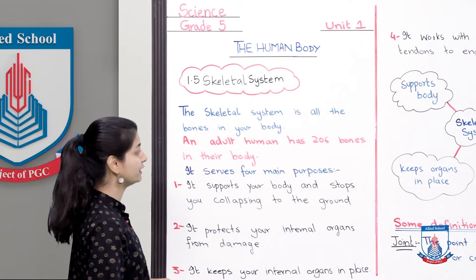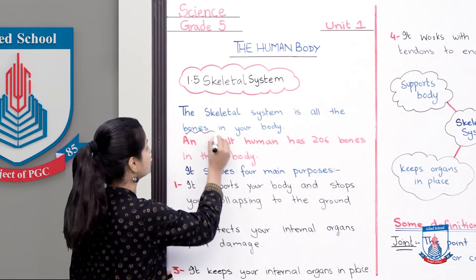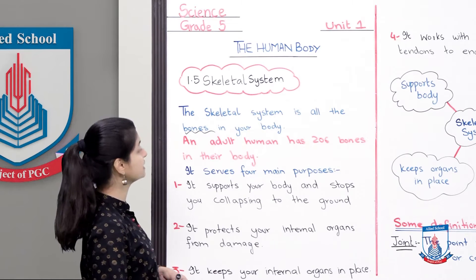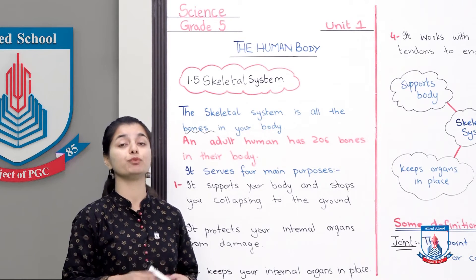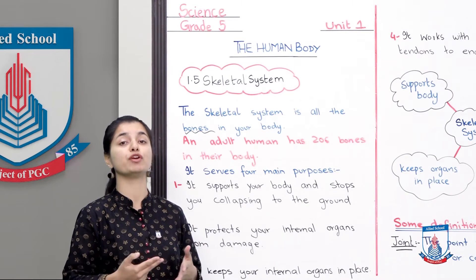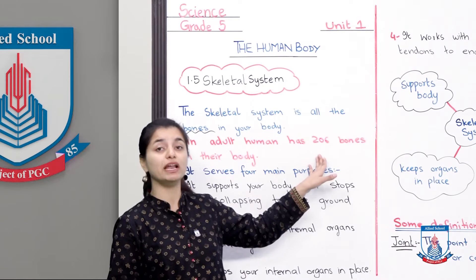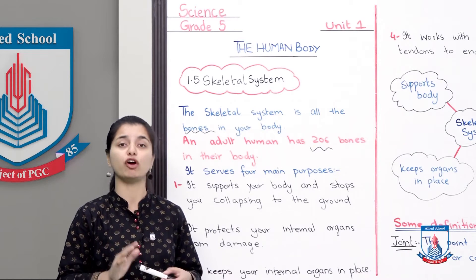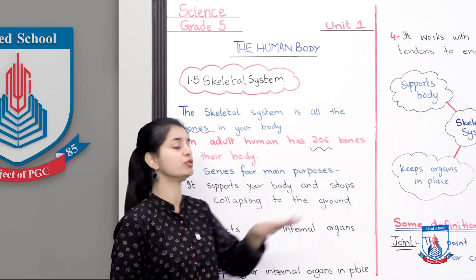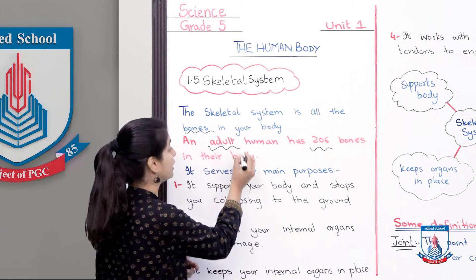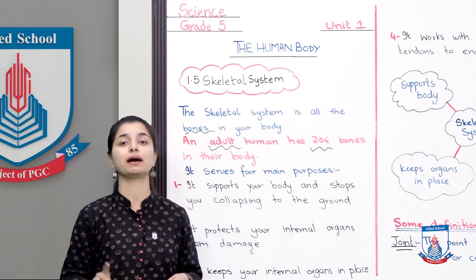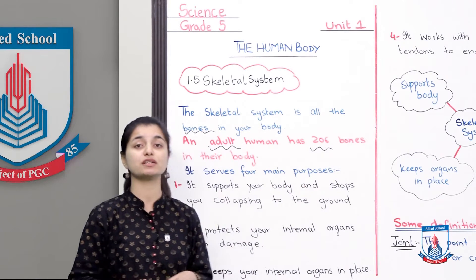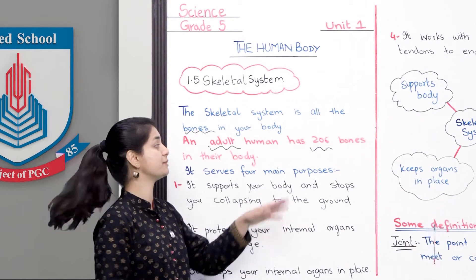The skeletal system is all the bones in your body. The bone structure of your body is called the skeletal system. An adult human has 206 bones in their body. As they grow up, their number of bones changes. Except for unique cases where someone may have one or two more, normally all adult humans have 206 bones. So the skeletal system is based on 206 bones.